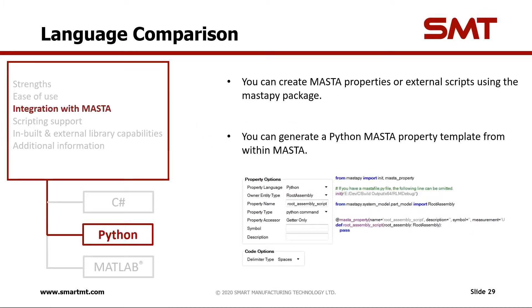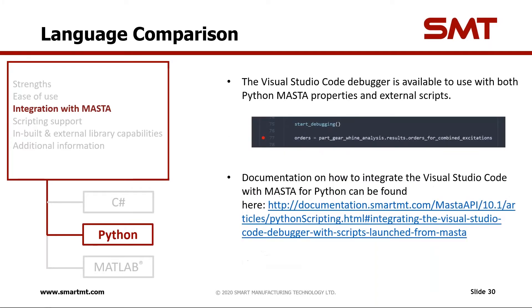Moving on to Python integration — similar to C#, you can create internal MASTA properties or external scripts using Python, using the masterpy package which we've created to interface with the MASTA API. Additionally, you can generate a template for internal MASTA properties from within MASTA itself. There's an example showing a property called 'root assembly script' as a getter attached to a root assembly component, and you can see the generated code which you can just copy and paste into your editor of choice. You can also use the Visual Studio Code debugger to debug your scripts — this works for both internal and external scripts.